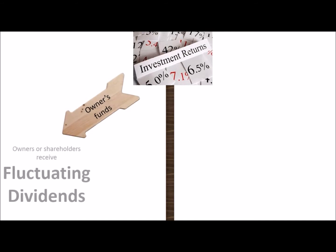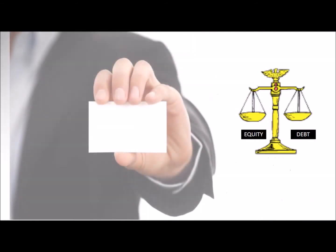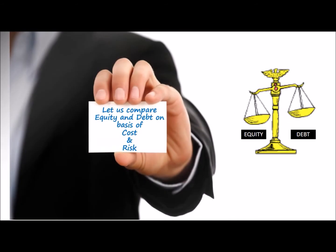Regarding returns: the person holding owners funds receives dividends, which are fluctuating in nature, whereas the person holding borrowed funds receives regular and fixed interest. Now let us compare equity and debt on the basis of cost and risk.